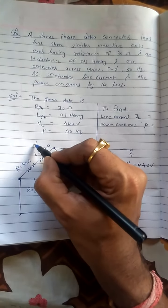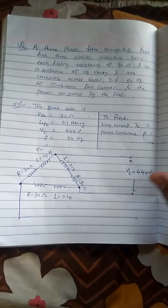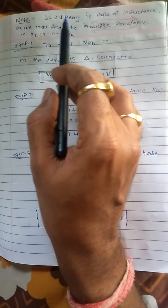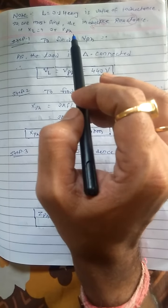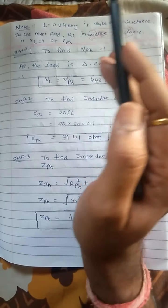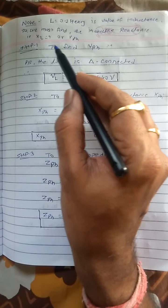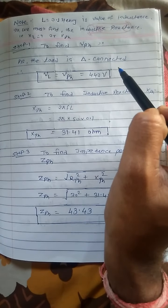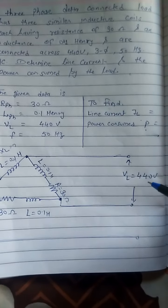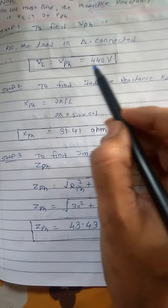First, we need to find XL. Whenever inductance or capacitance value is given, you must first find the reactive term's value. Step 1 is to find VPH. Since this is a delta connected system, the line voltage equals the phase voltage. That means VL = VPH = 440V.